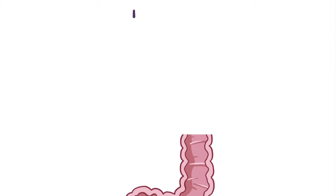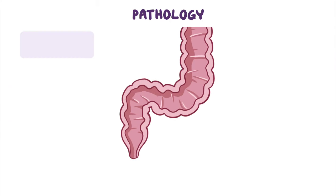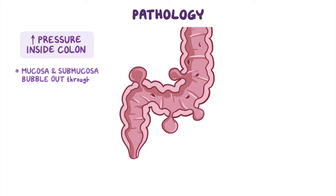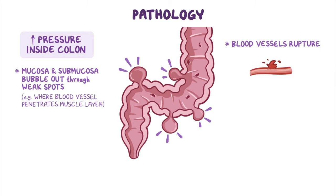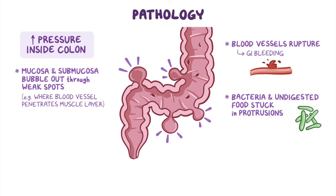Now regardless of the cause, there's an increase in the pressure inside the colon. This pressure pushes on the mucosa and submucosa until they bubble out through weak spots along the wall, like where a blood vessel penetrates the muscle layer of the intestine. These blood vessels can get weaker and rupture, leading to gastrointestinal bleeding. In addition, bacteria and undigested food may get stuck inside these protrusions and cause infection within the intestinal wall.